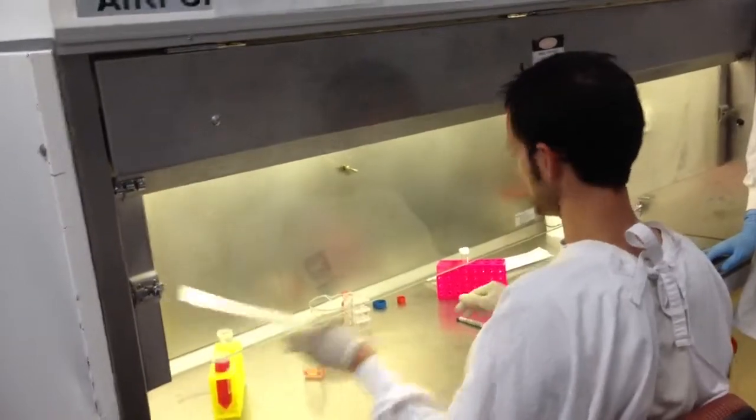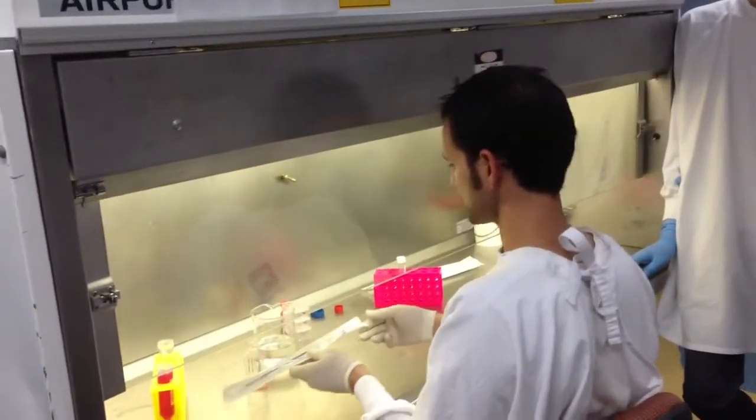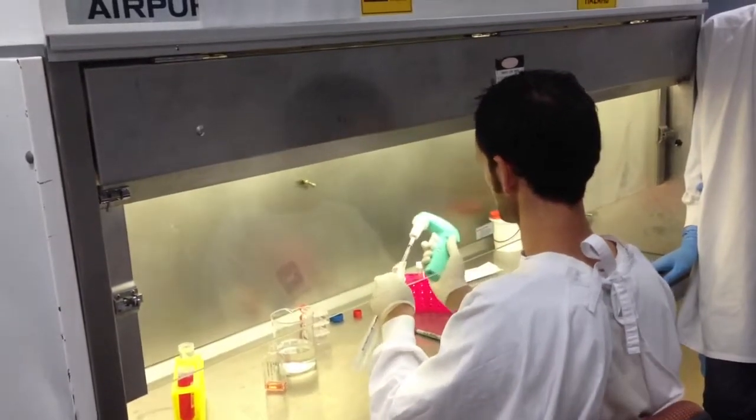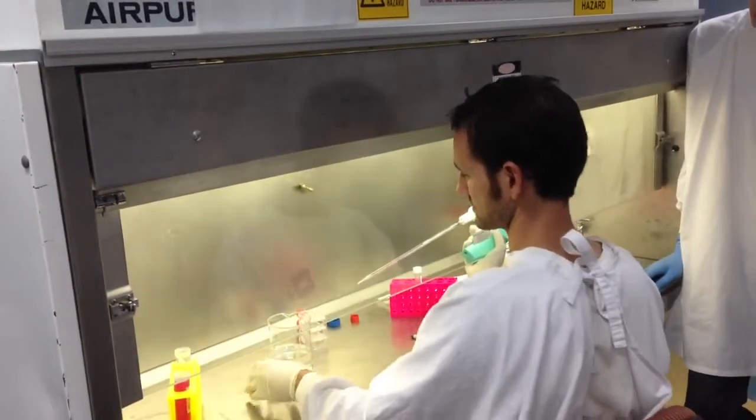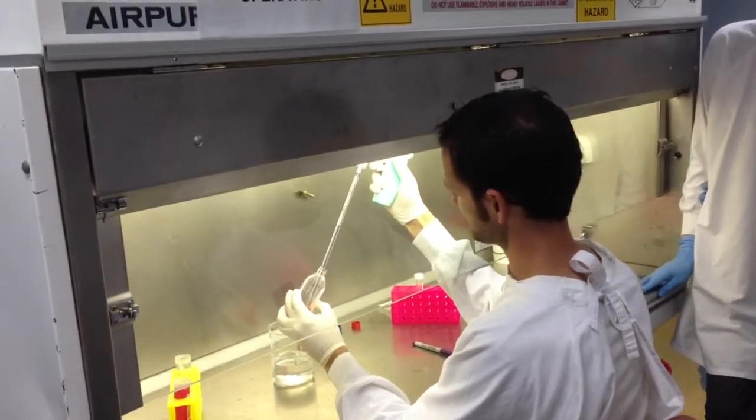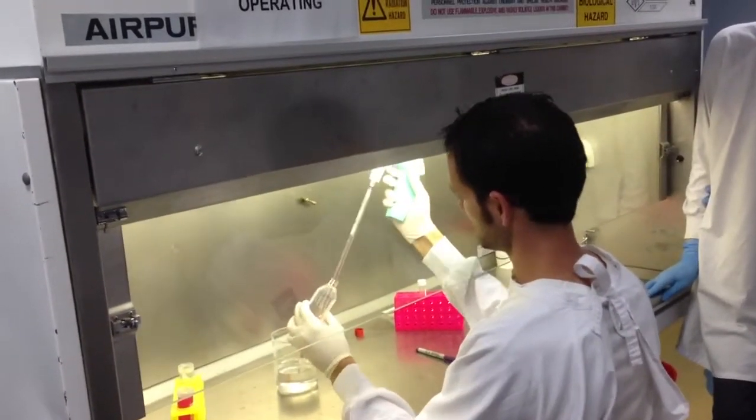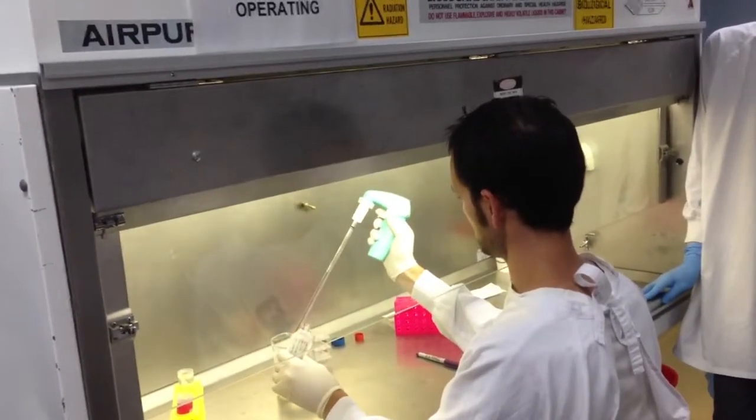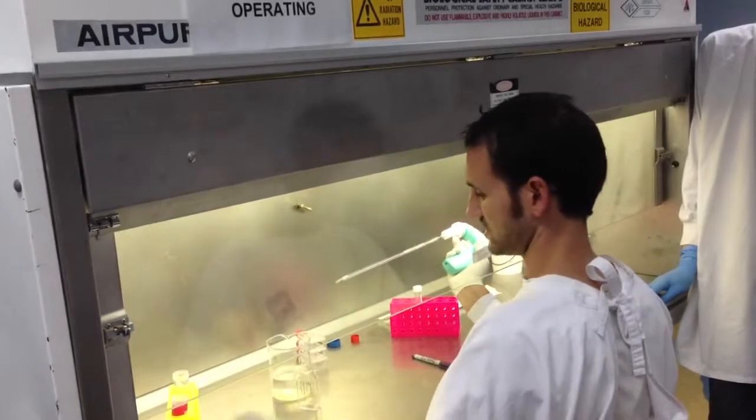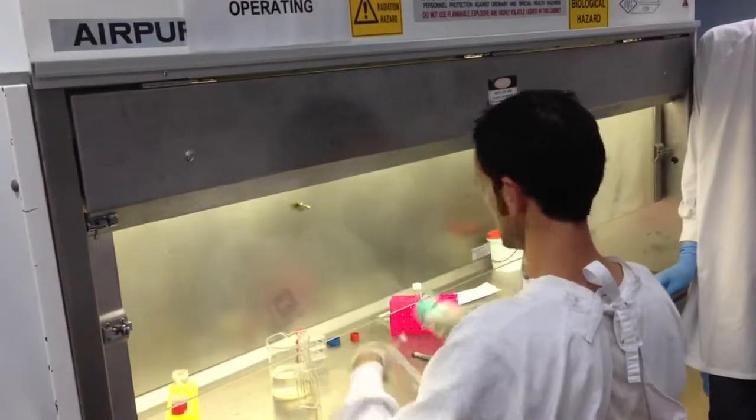The first step is to remove the spent media. Put it down the bottom corner. We want to sterilize that, so put it into the ethanol. I don't want to use this pipette again because it's contaminated.